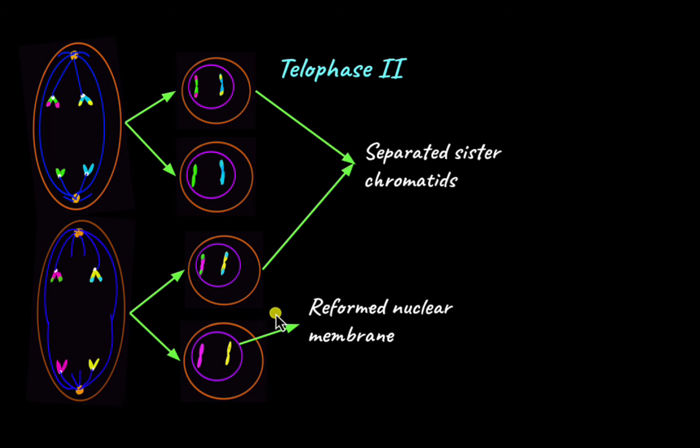We originally started with one diploid germ cell, but now we are left with four haploid cells. And now this is a gamete. It's a haploid gamete, and when two such haploid gametes fuse, the diploid zygote is formed and the diploid nature of the cell is restored again. And that is about meiosis 2, the formation of four haploid cells.